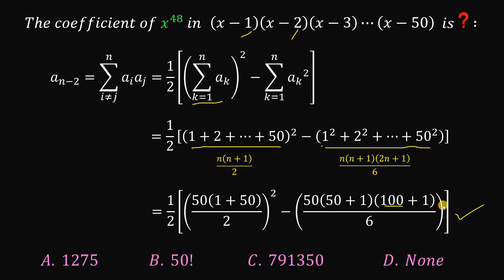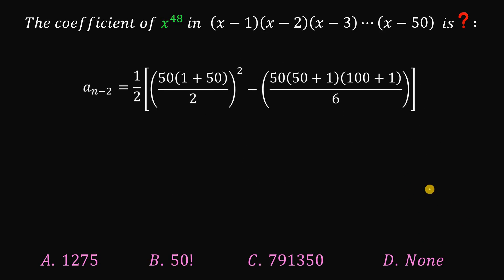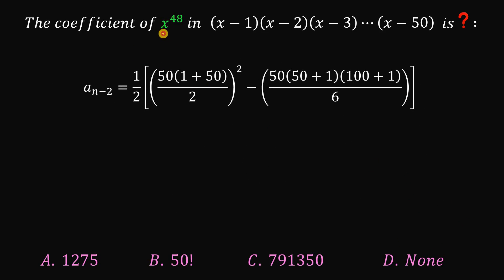Now, let's focus on this result because this is just the sum of pairs or the coefficient of x raised to the power of 48. Now, simplify this. We have 1 half multiplied by 25 times 51 raised to the power of 2 minus 25 times 17 times 101. And this simplifies to 1,582,700.